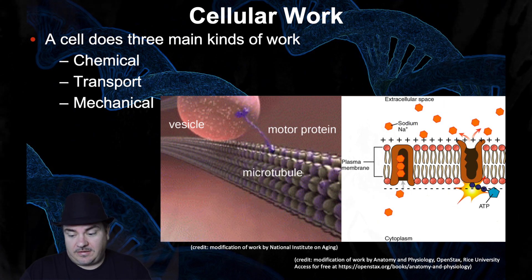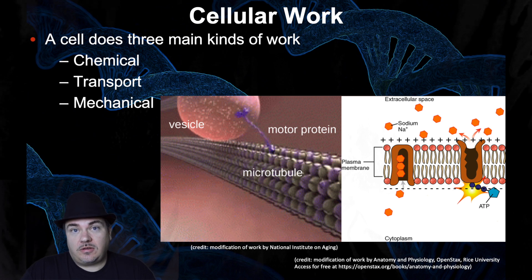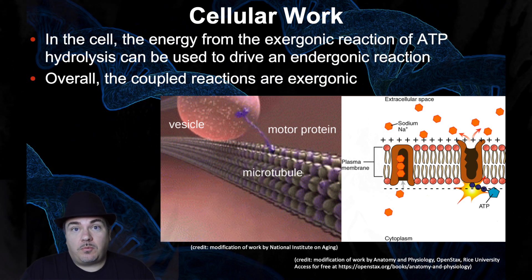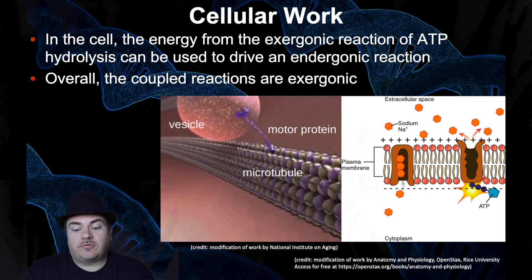So we're going to learn about ATP. All I've said about ATP so far is that it's a cell's rechargeable battery — it stores energy. When you need energy, you use ATP as your source of energy. In the cell, the energy from the exergonic reaction of ATP hydrolysis can be used to drive an endergonic reaction. Overall, the coupled reactions are exergonic.